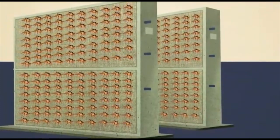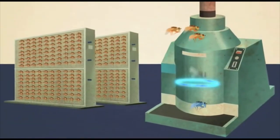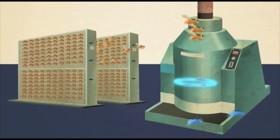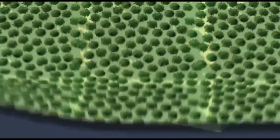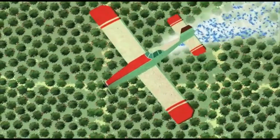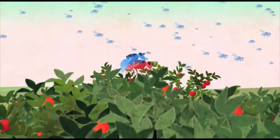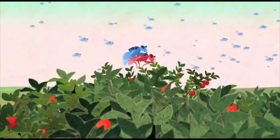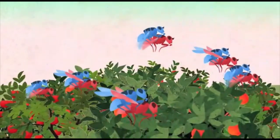Sterile insect technique is developed by the IAEA, wherein males of an insect pest species are sterilized using radiation and released in the fields. The females upon mating with these sterile males give no offspring, thus controlling the pest population without harming the environment.